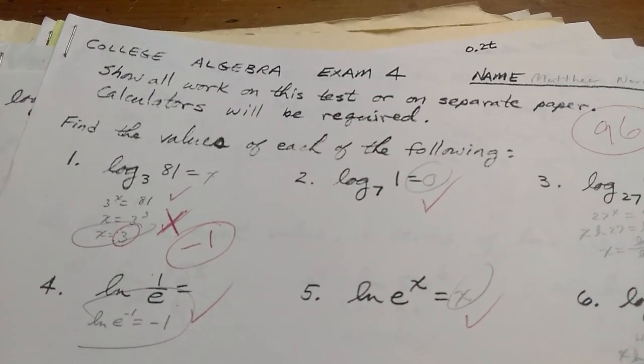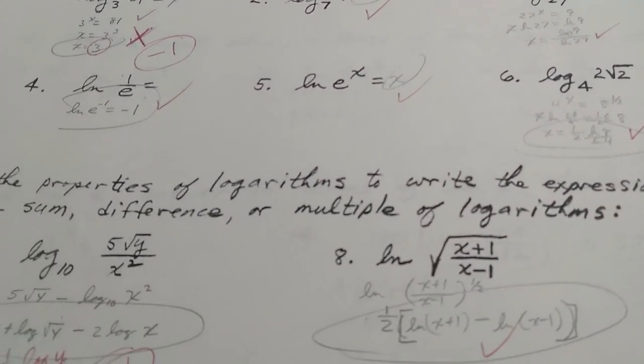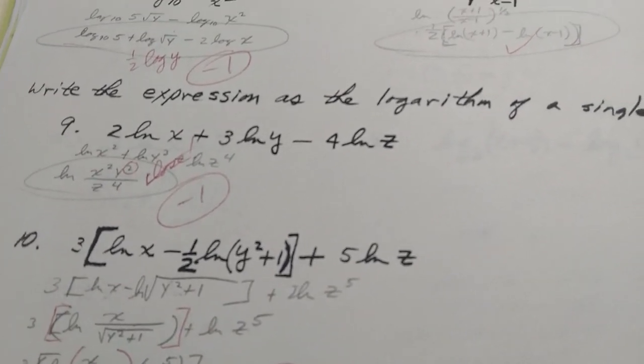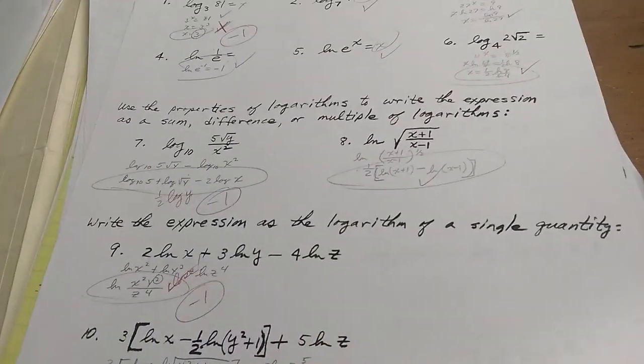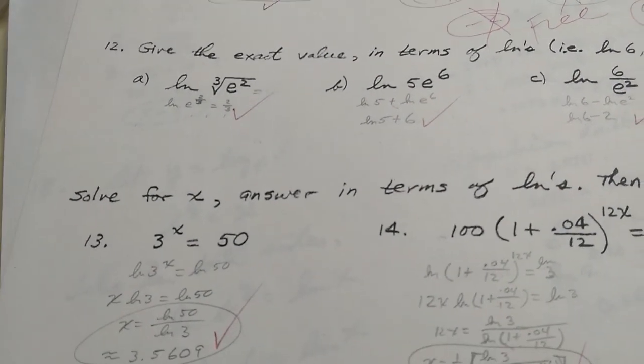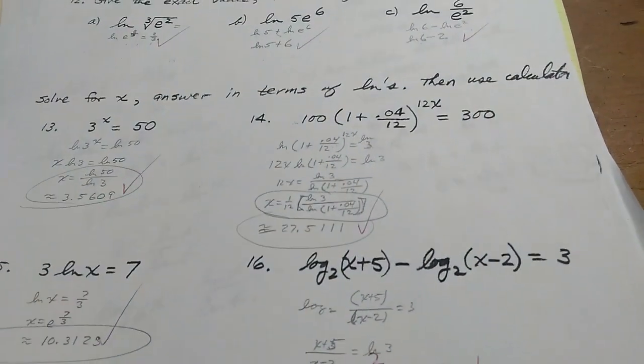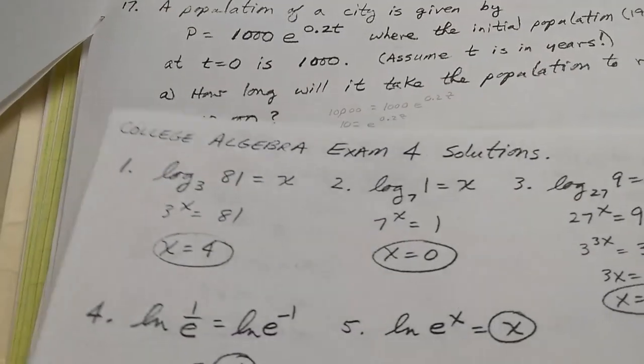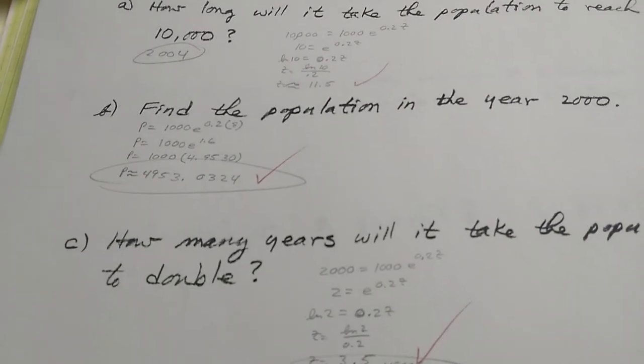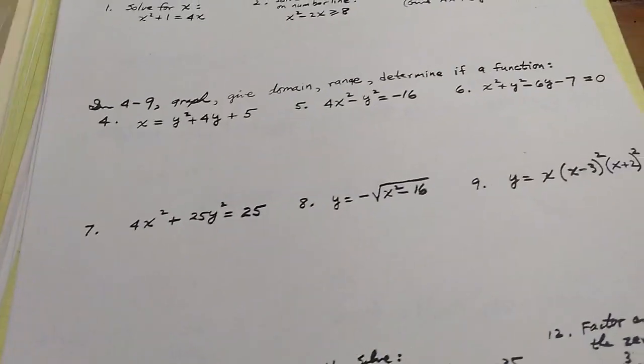I skipped ahead a little bit to exam 4, because I figured exam 4 might be a little more interesting. It looks like it's on logarithms, just some basic questions with logs, some simplifications. Still very similar to what we do today in college algebra. Some condensing, writing it as a single logarithm. Let's turn the page to see what else we got. Some more properties of logs, giving the exact value, some logarithmic equations. Looks like he did pretty good on this test.